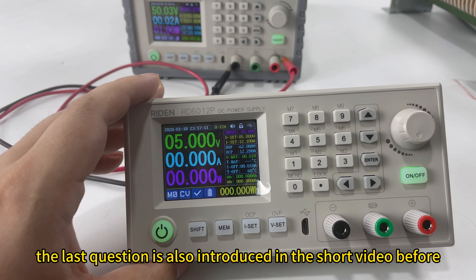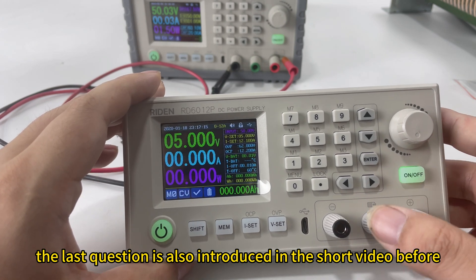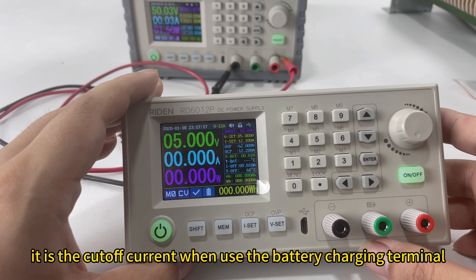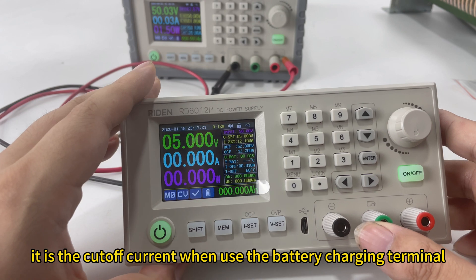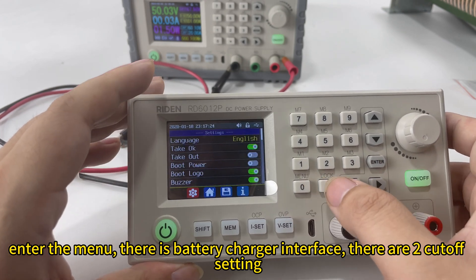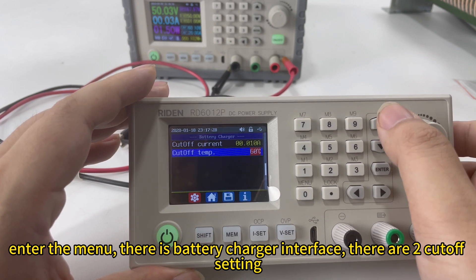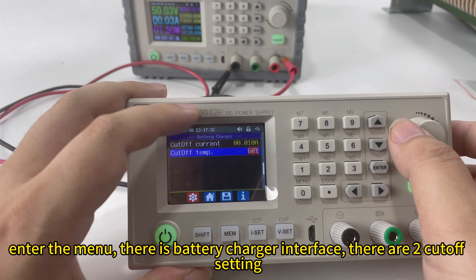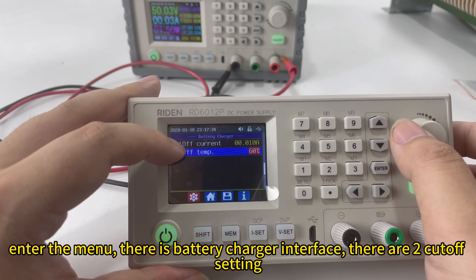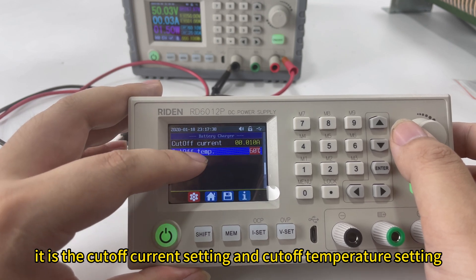For the last question, it was also introduced in a short video before. It is about the cutoff current when using the battery charging terminal. You can see I press the menu button and I check this. At the battery charger interface, there are two cutoff settings: the cutoff current setting and the cutoff temperature setting.